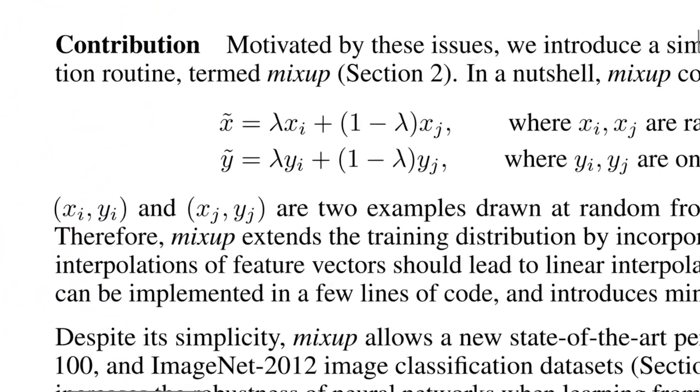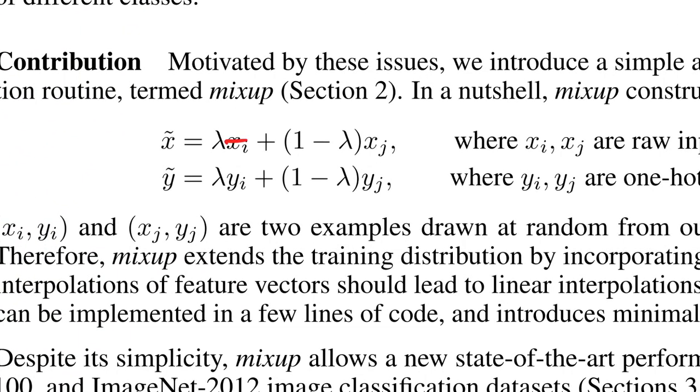Formally, you take two data points and you mix them using this lambda mixing factor, that will give you a new data point that's in between the other data points. And you take the two corresponding labels and you mix them accordingly as well. And that will give you the label for that data point.